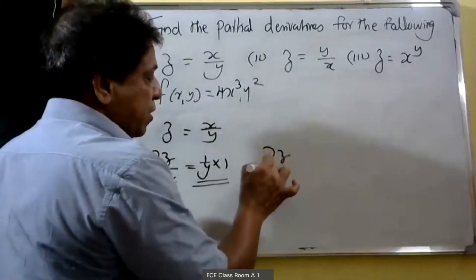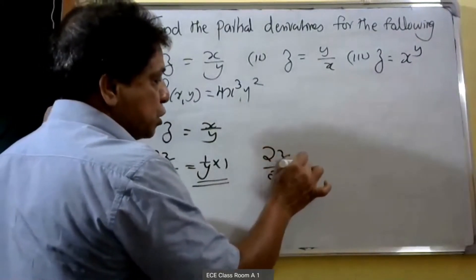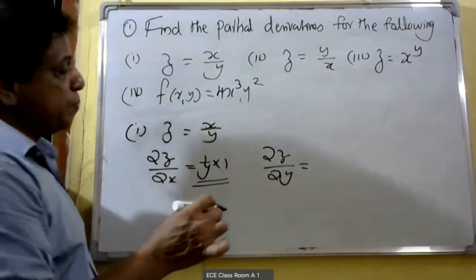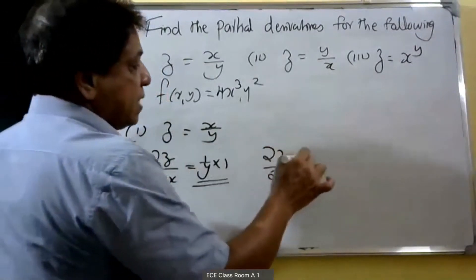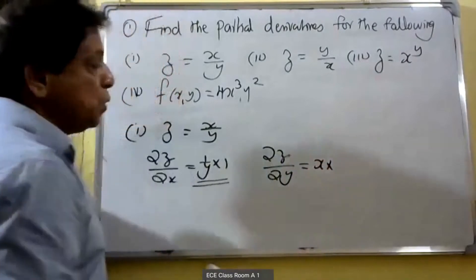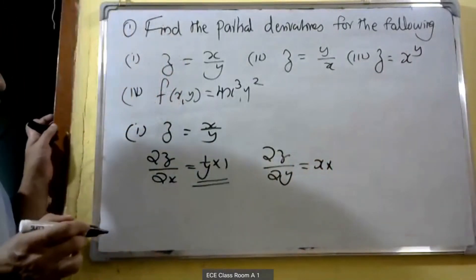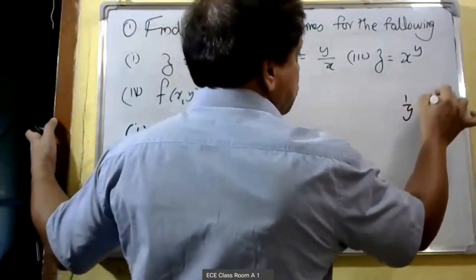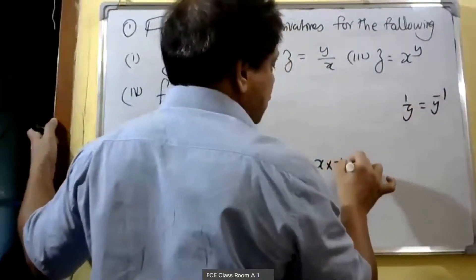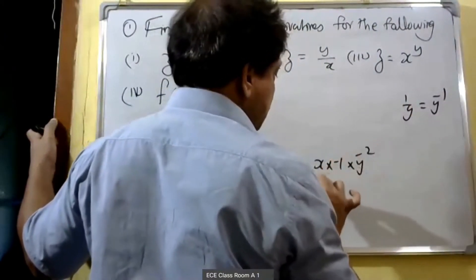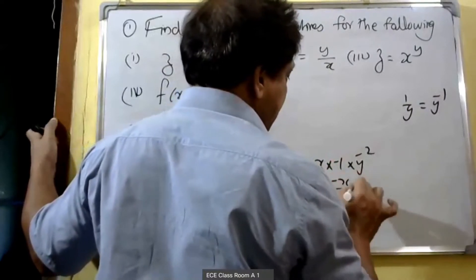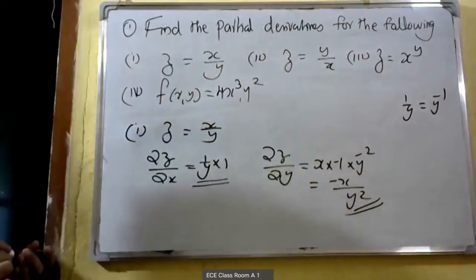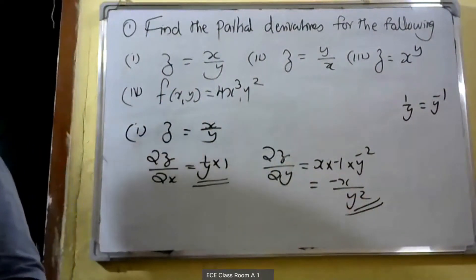Then ∂z/∂y. When we are partially differentiating with respect to y, x is a constant. x into 1; y is a variable. Therefore, 1/y is y raised to minus 1. Therefore, minus 1 into y raised to minus 2. Therefore, ∂z/∂y is equal to minus x by y square.